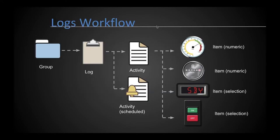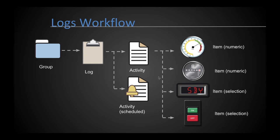Here is the overview of the log concepts: groups lay out the facility organization; inside groups are logs representing the equipment you're tracking; inside each log are one or more activities performed on that equipment; and finally, items assigned to activities are the actual data points. Items can be assigned to one activity or multiple — a pressure reading might be tracked during both the daily round and the weekly inspection, so you can choose when readings need to be collected.